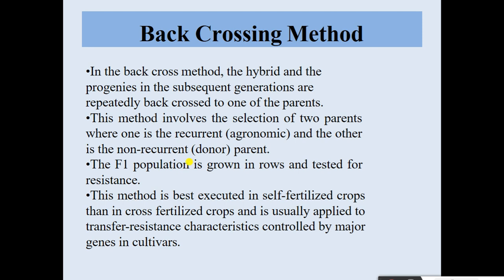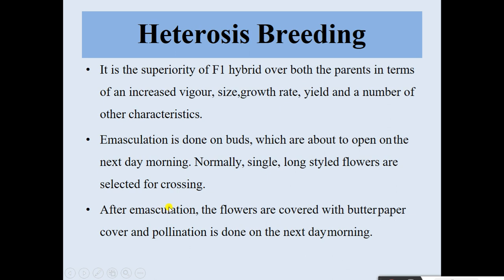In the back cross method, the hybrid and its progenies in subsequent generations are repeatedly back crossed to one of the parents. This method involves selection of two parents: one is the recurrent parent (agronomic) and the other is the non-recurrent donor parent. The F1 population is grown in rows and tested for resistance. This method is best executed in self-fertilized crops and is usually applied to transfer resistance characteristics controlled by major genes.